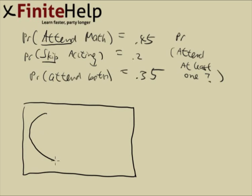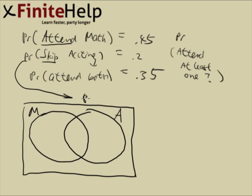I'm going to make one set to be attend math, which is M, and then the other set is going to be attend accounting, which is A. Here we can deduce that the probability of attending accounting is going to be 0.8. It's just simply the complement.